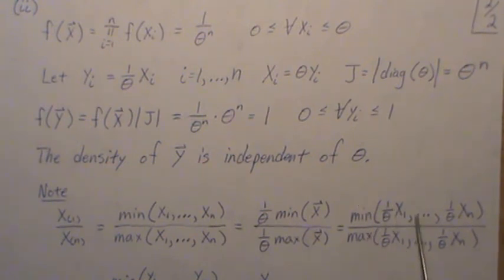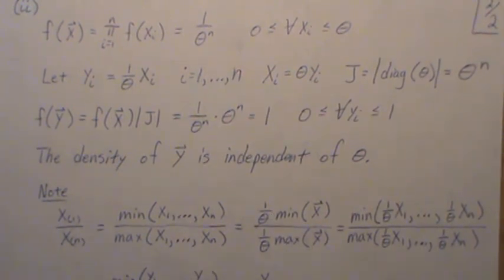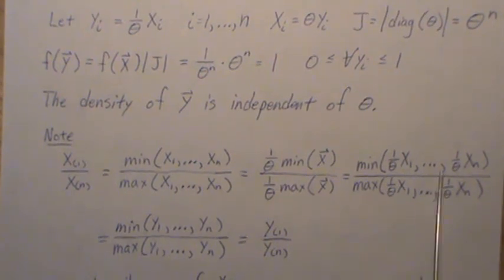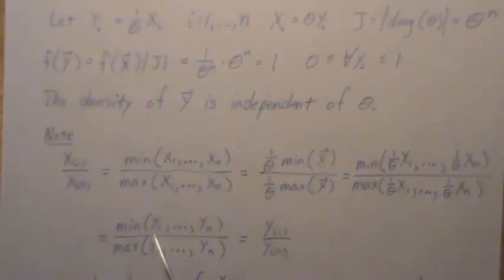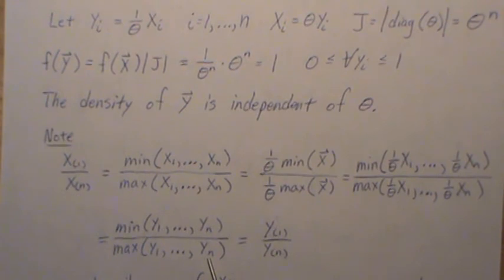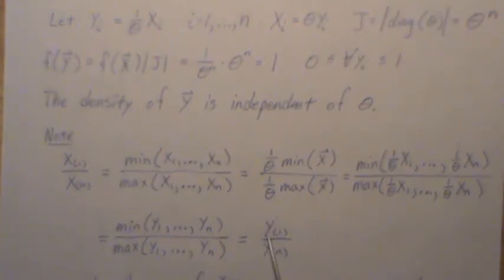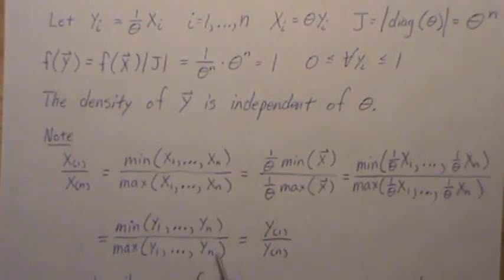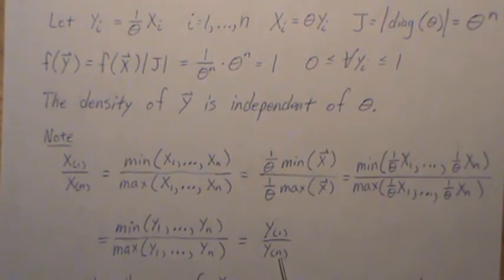Right? Because the minimum is one of those, and it'll come out, and the maximum is one of those. Then the thetas will cancel, and we're just left, we're back with this. But this is equivalent to the minimum of the y's, right? So the minimum of the y's is the first order statistic of the y's, and the maximum yn, the maximum.